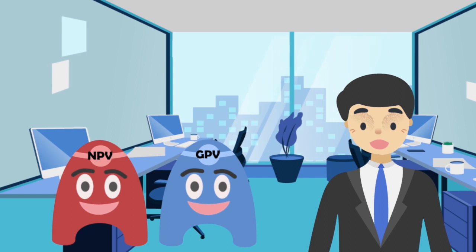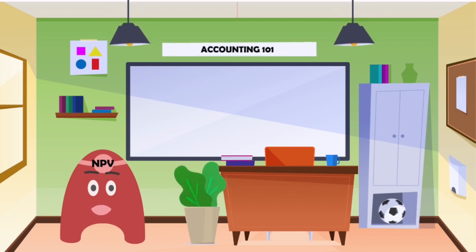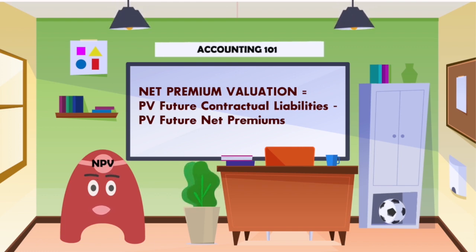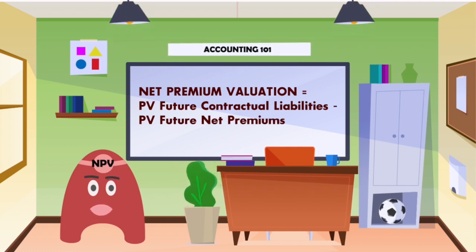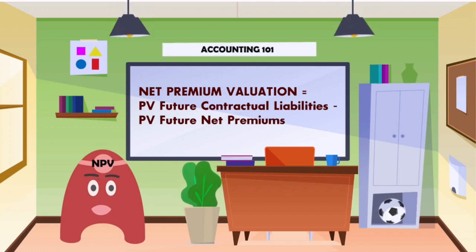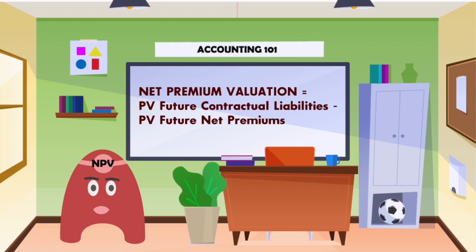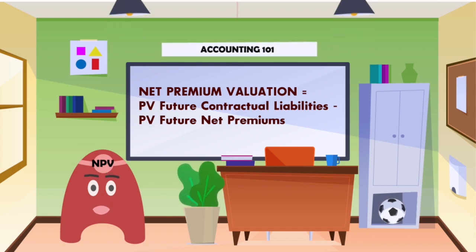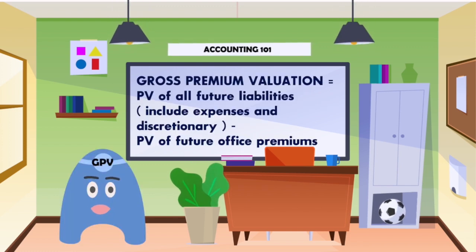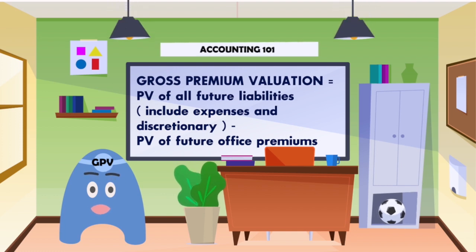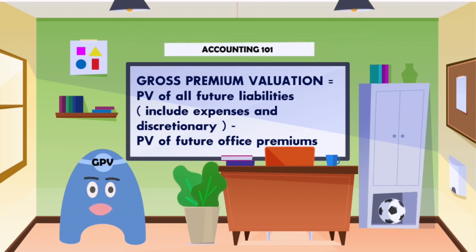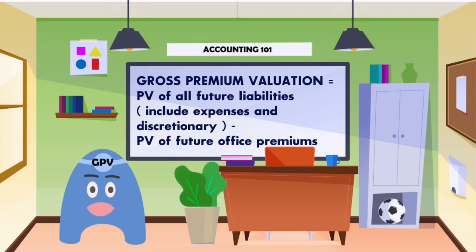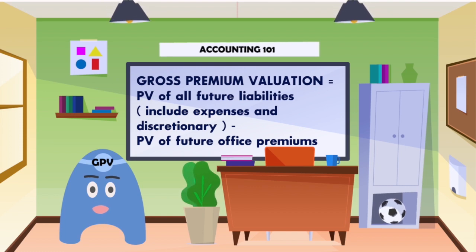Now can you tell me more about each of you so I can make a better decision today? NPV reserves is the present value of future contractual liabilities subtracted by the present value of future net premiums, where net premium is a premium that provides contractual benefits at policy commencement under valuation basis, payable under the same conditions as office premium. Only mortality and interest are explicitly allowed under NPV. This method also needs additional adjustments, and assets are typically valued at book. GPV reserves is the present value of all future liabilities — which include expenses and discretionary benefits — subtracted by the present value of future office premiums. Each parameter requires an explicit assumption under the GPV method. Assets are typically valued at market, and discount rates are typically derived from market observable yields — market consistent.